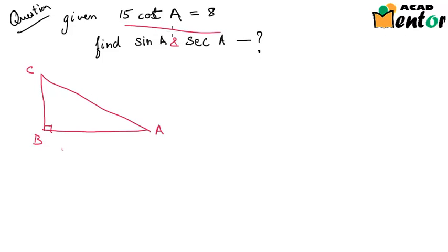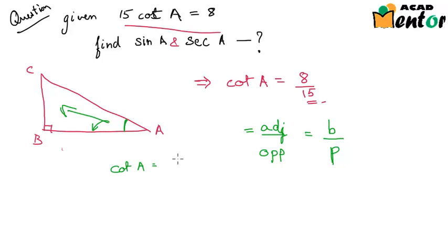Now we are given that 15 cot A equals 8, or cot A equals 8 by 15. We remember that cot A is equal to the adjacent side by the opposite side, or the base by perpendicular. So perpendicular is the opposite side, adjacent side is the base. So cot A would be AB by BC, and it is given as 8 by 15.